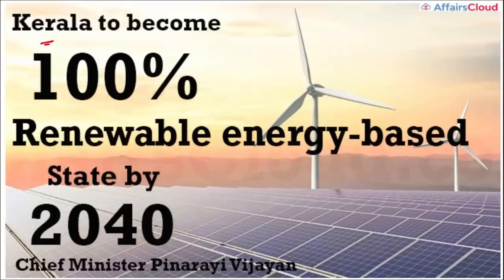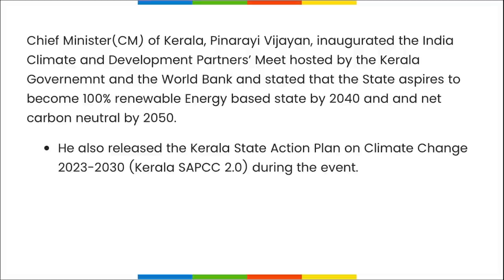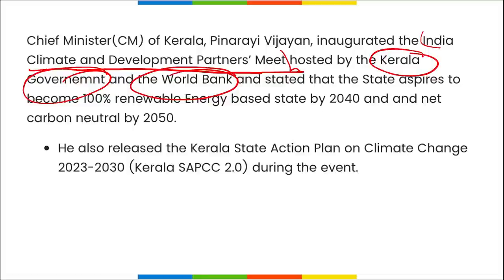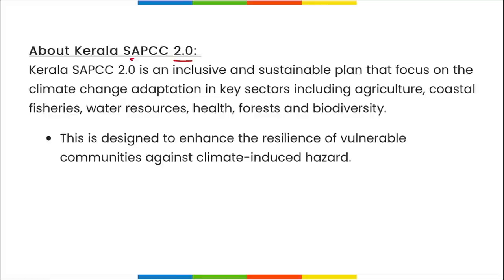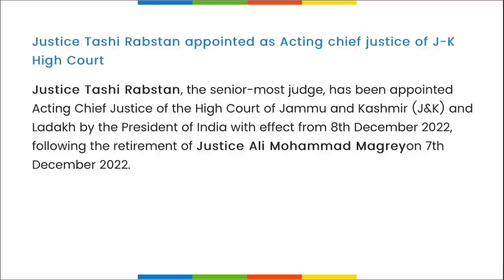Kerala is aiming to become a 100% renewable energy-based state by 2040 and carbon neutral by 2050. The Kerala Government, along with the World Bank, inaugurated the India Climate and Development Partner Meet. Kerala's KSEB 2.0 is an inclusive and sustainable plan focusing on climate change adaptation in key sectors including agriculture, coastal fisheries, water resources, health, forestry, and biodiversity.